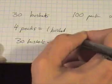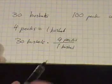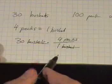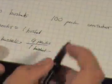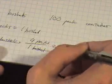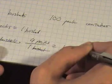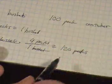And 30 times 4 is 120, so this equals 120 pecks.